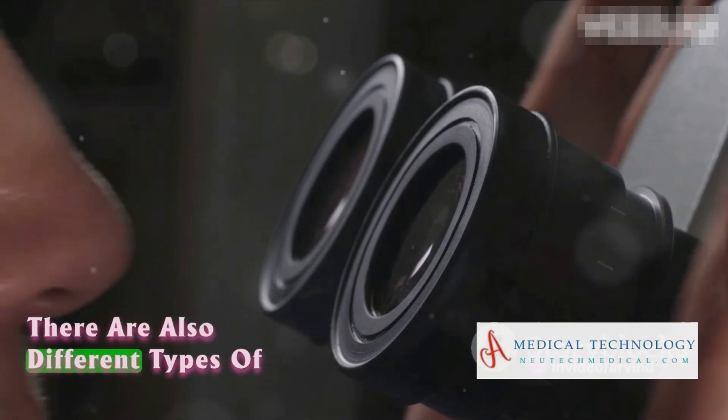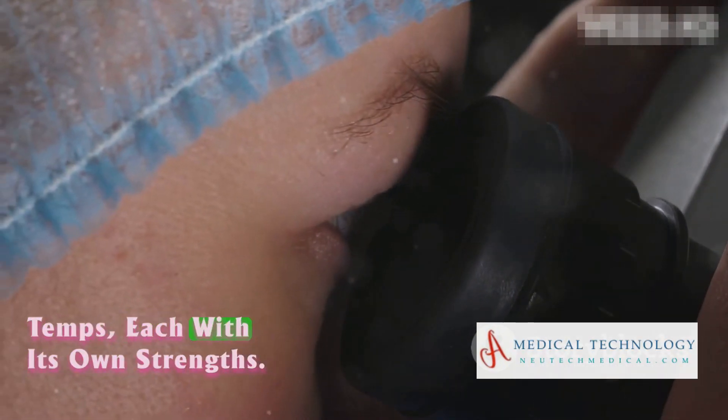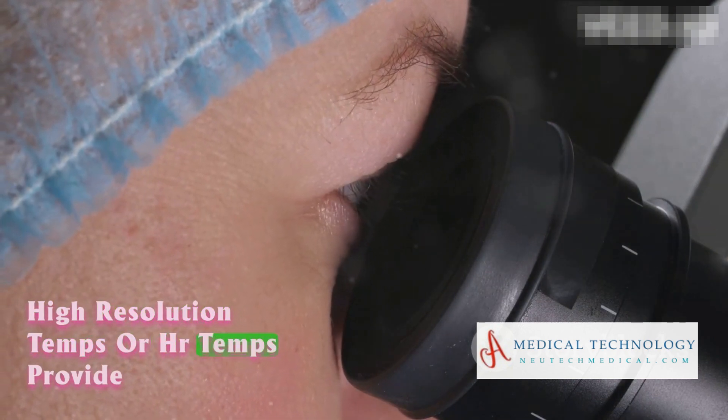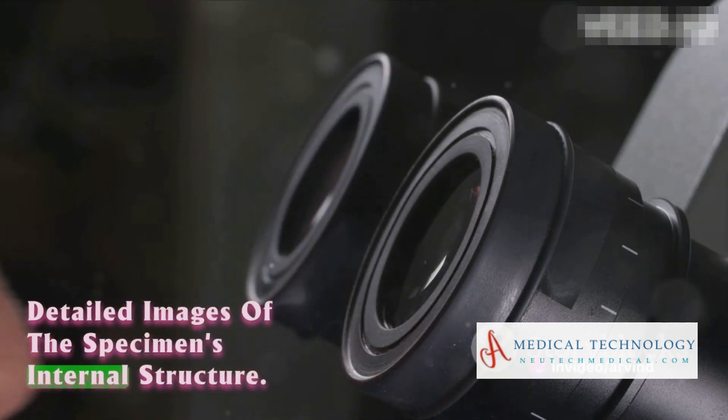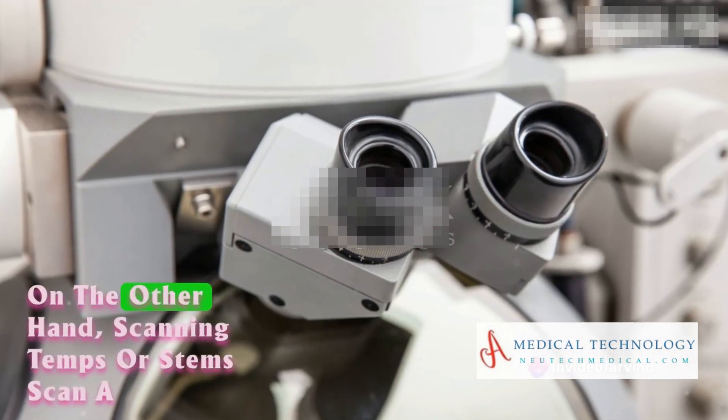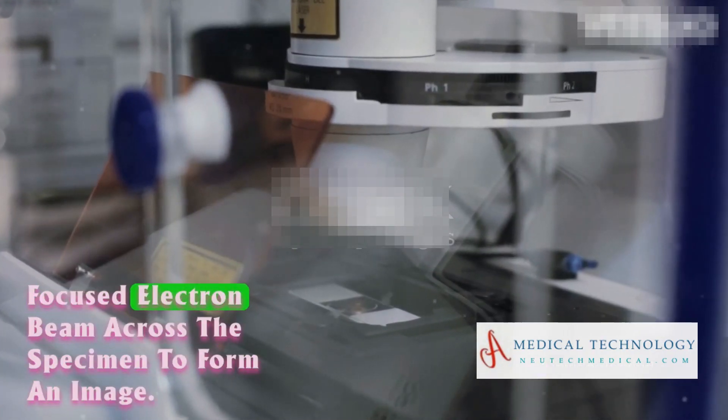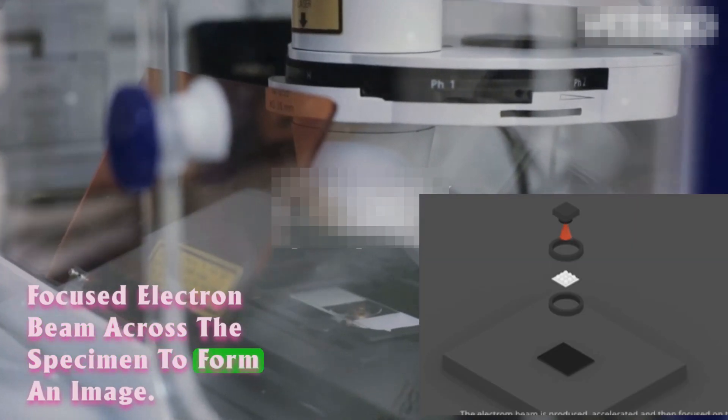There are also different types of TEMs, each with its own strengths. High-resolution TEMs or HR TEMs provide detailed images of the specimen's internal structure. On the other hand, scanning TEMs scan a focused electron beam across the specimen to form an image.